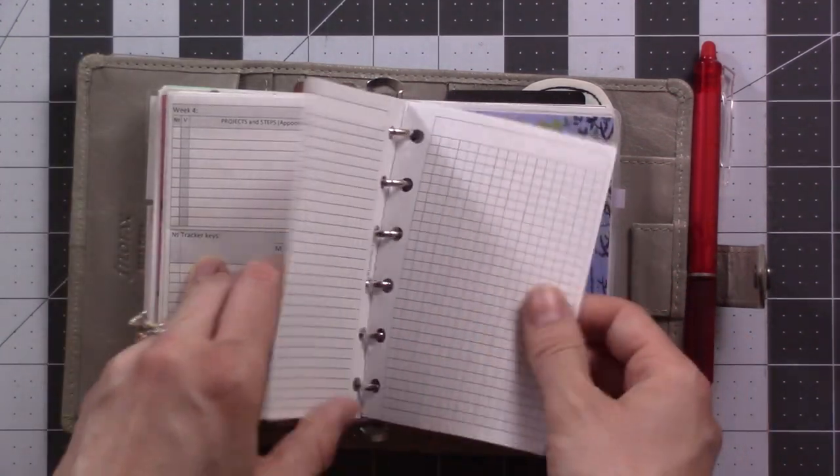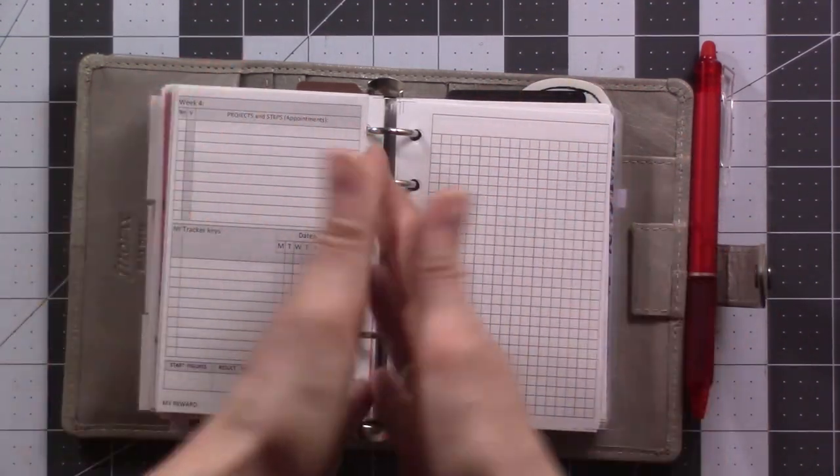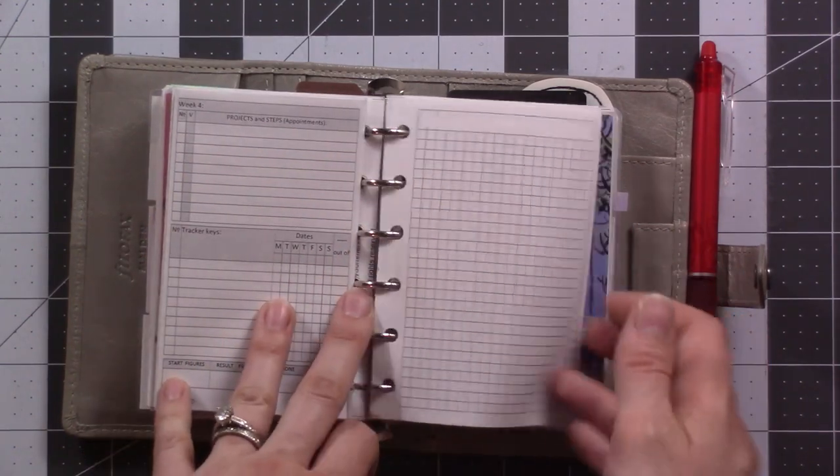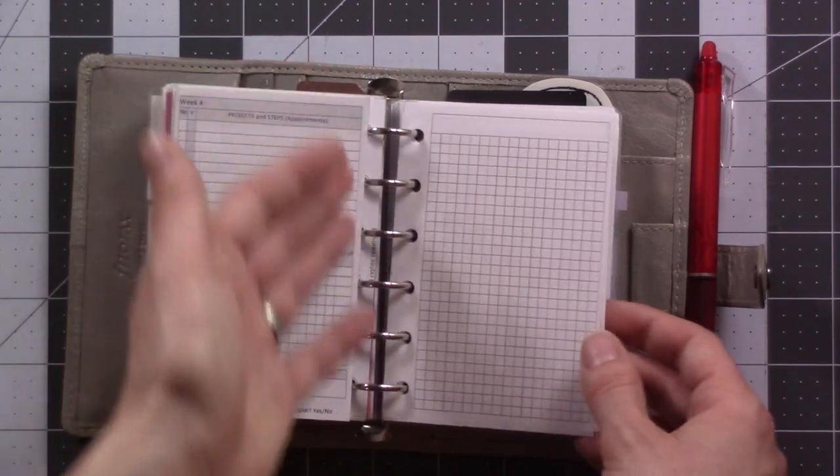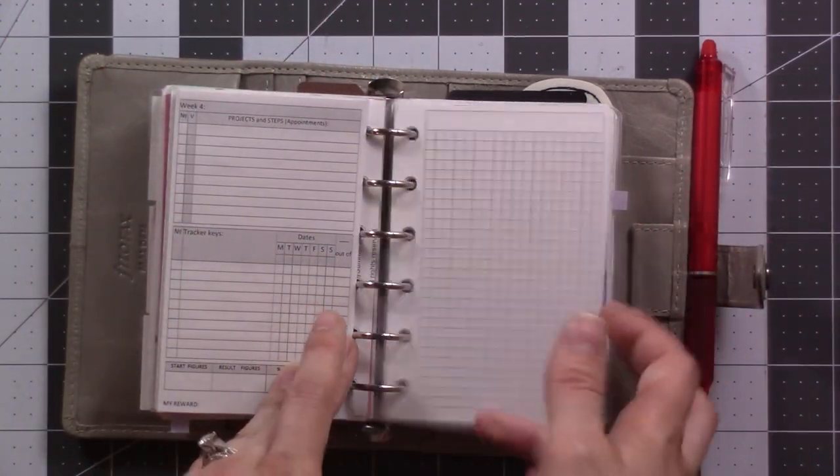And then it also comes with these blanks, like grid pages that kind of go with it. So you can print it out as a traveler's notebook insert, and you would have all these pages in the back. As it is with the rings, it's basically just a bunch of notepaper and you can add more, take it away.